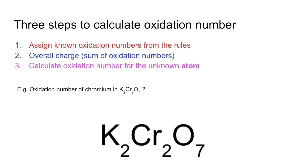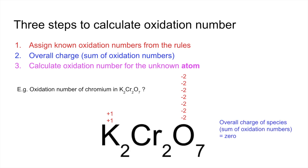Example one: what is the oxidation number of chromium in K₂Cr₂O₇ (potassium dichromate)? Step one — assign known oxidation numbers: potassium is Group 1, so plus one each; write plus one twice (a common mistake is writing plus two for both potassiums, but each potassium is individually plus one). Oxygen: write seven separate negative twos. Step two — the overall charge is zero, so everything must sum to zero. Negative two × 7 = −14, plus two from the two potassiums, so the two chromiums together are +12. Dividing by two gives plus six for each chromium.